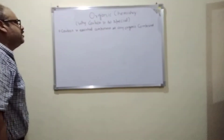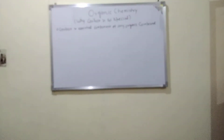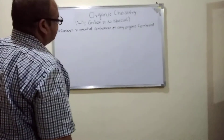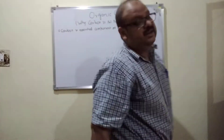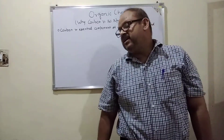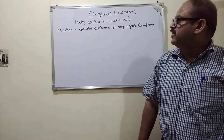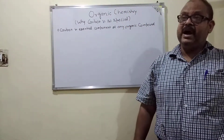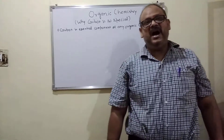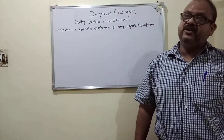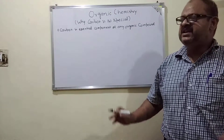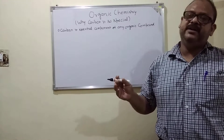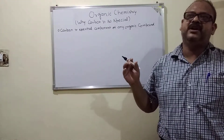कोई भी ऑर्गेनिक कंपाउंड बिना कार्बन के नहीं बने। तो कार्बन की कौन-कौन सी प्रॉपर्टीज हैं जिनकी वजह से कार्बन इतने बड़े नंबर में कंपाउंड बनाता है? Carbon has some special properties: Catenation, Hybridization, Isomerism, and Electronegativity — which make carbon form a huge number of compounds.